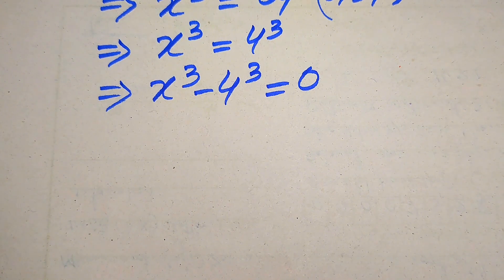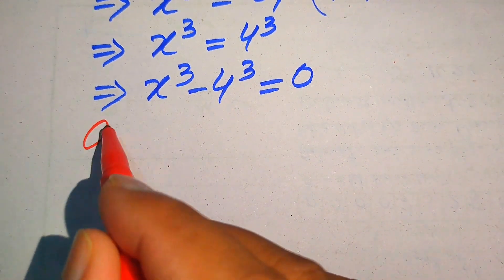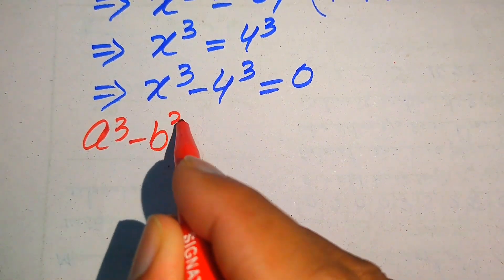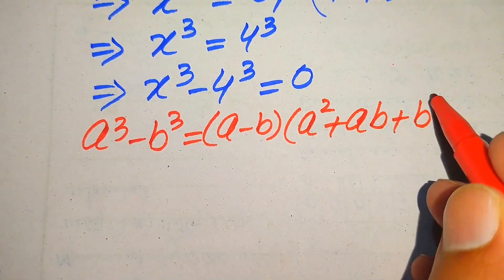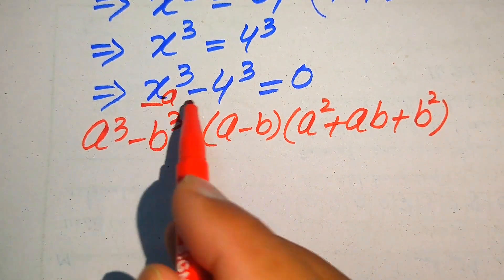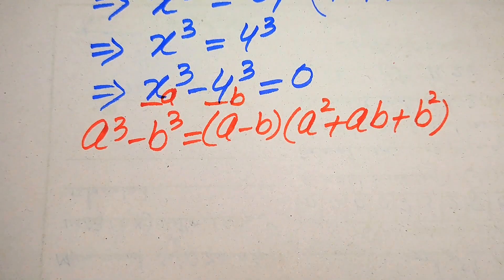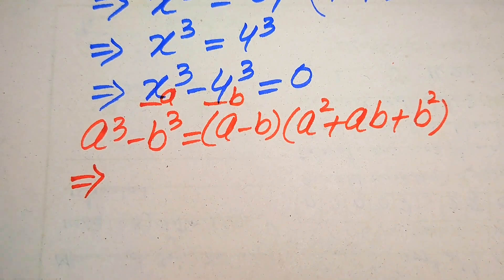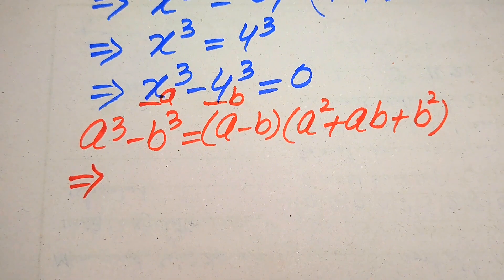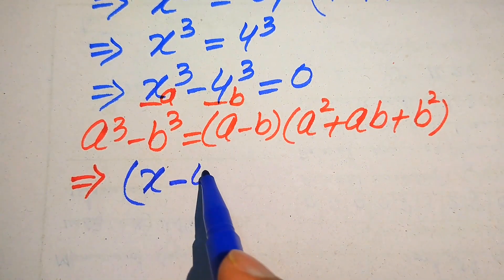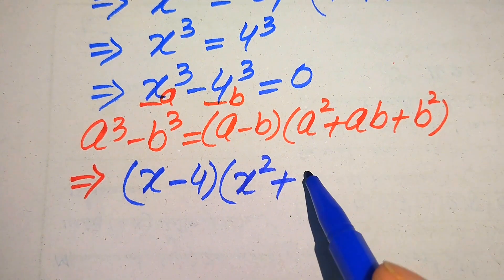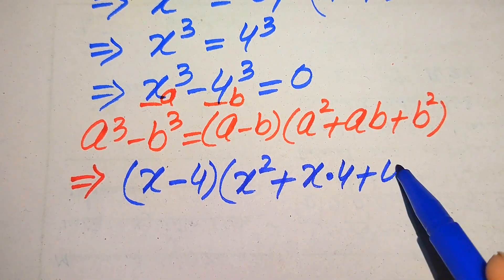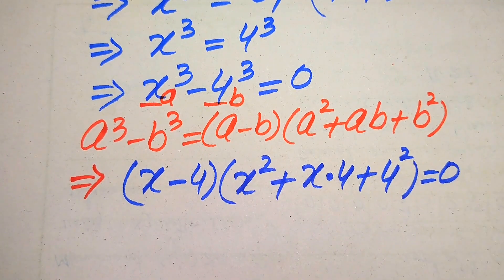This equation is a cubic equation and we apply the difference of cubes formula: a³ - b³ = (a - b)(a² + ab + b²). Here the base of the first term is our a (which is x) and the base of the second term is our b (which is 4). Expanding our equation: (x - 4)(x² + 4x + 16) = 0.